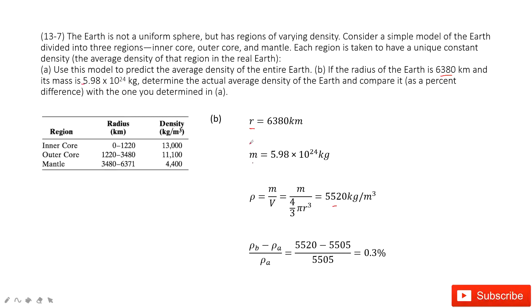Now we need to find the difference. The percent difference between a and b. So the percent difference between a and b, we use the density for b minus density for a divided by density for a. We get it. It's just a 0.3 percent difference. Thank you.